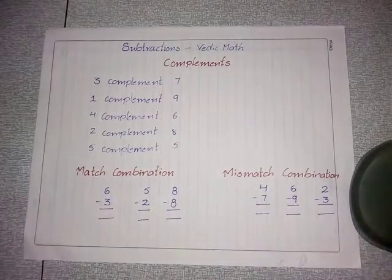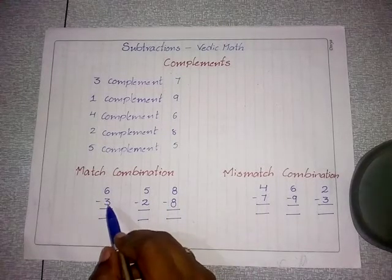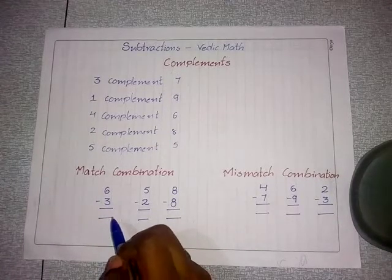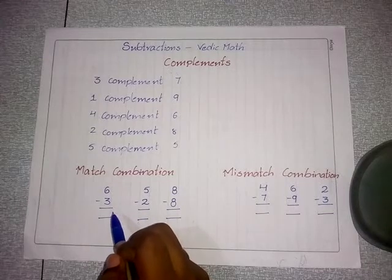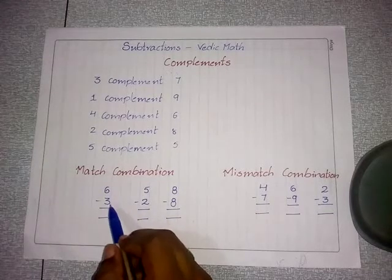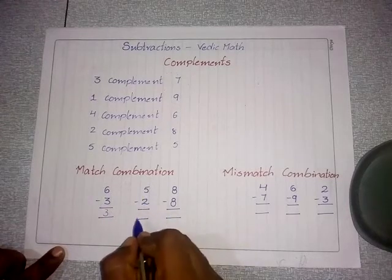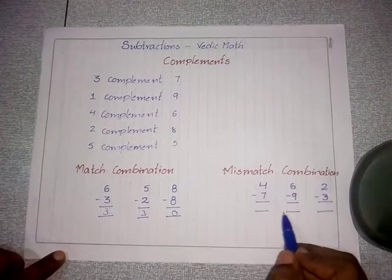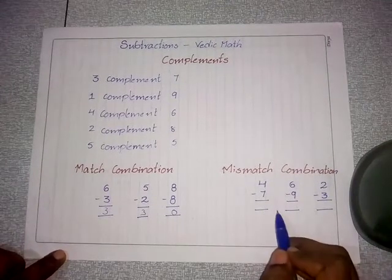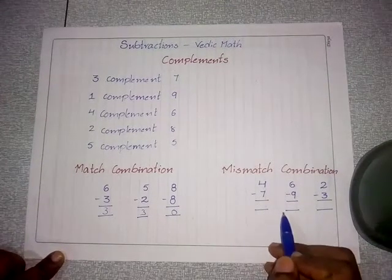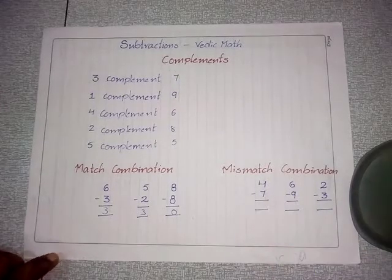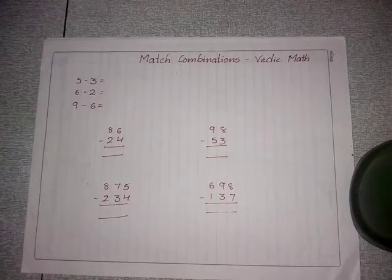One last rule before teaching subtraction is understanding the terminology of match combination and mismatch combination. A match combination is when subtraction is possible — for example, 6 minus 3 equals 3, 5 minus 2 equals 3, 8 minus 8 equals 0. A mismatch combination is when it is not possible to subtract directly.